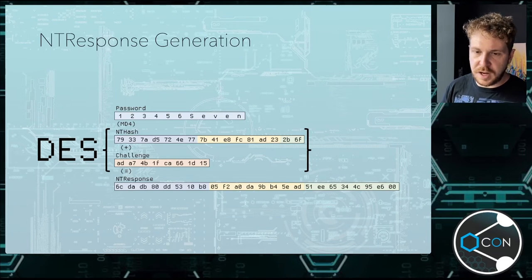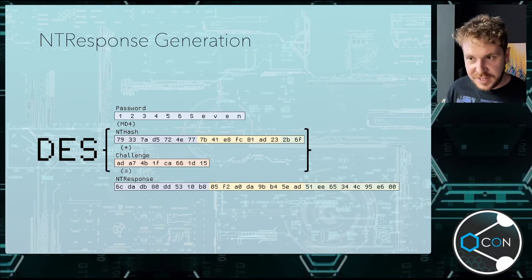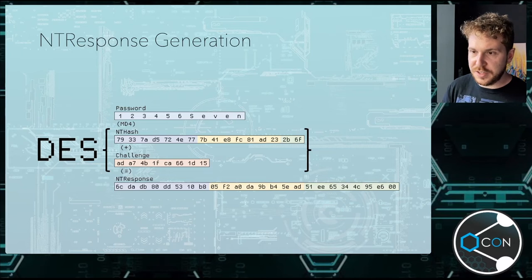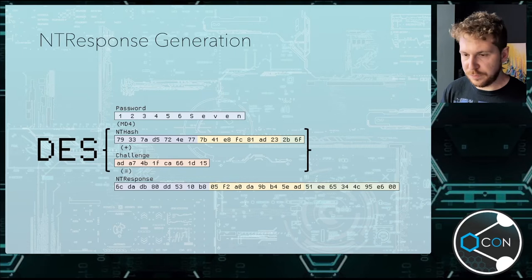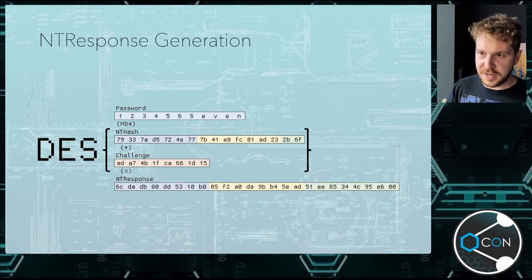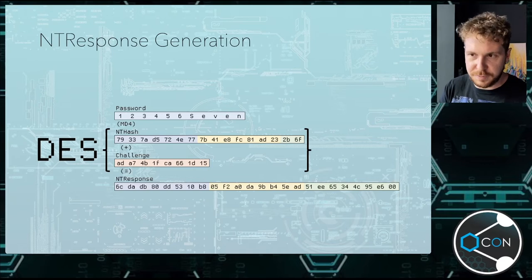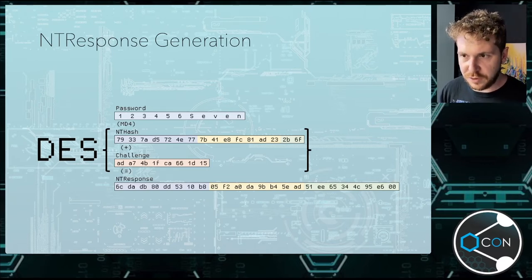The thing Arthur generates: he takes his password, he NT hashes it - NT hashing is basically just an MD4 sum. He then adds that to the challenge; essentially he encrypts the challenge using his NT hash. This generates the NT response which is what he submits. So he's encrypted the challenge with his NT hash. This gives the Frenchman the opportunity to encrypt the same challenge with the NT hash that he knows, and if it ends up in the same response, he knows Arthur has the correct password.